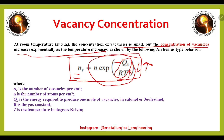In this formula, N_v is the number of vacancies per cm³, N is the number of atoms per cm³, Q_v is the energy required to produce one mole of vacancies (in cal/mol or J/mol), R is the gas constant, and T is the temperature in Kelvin.